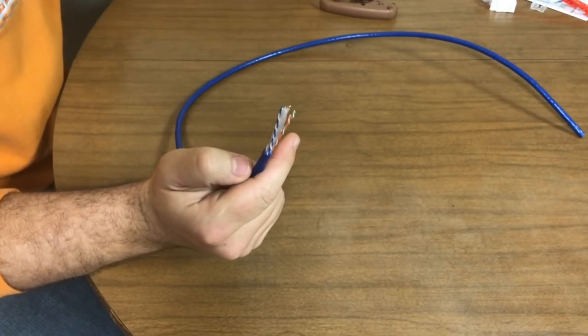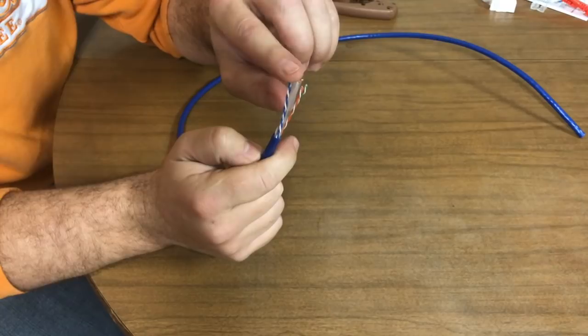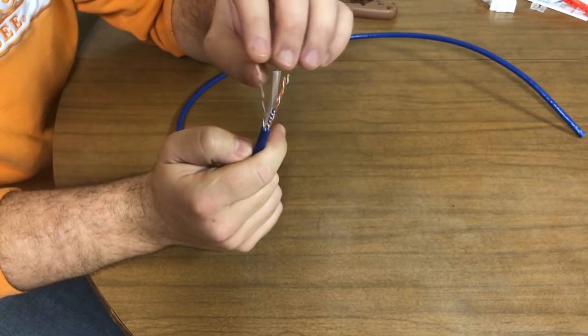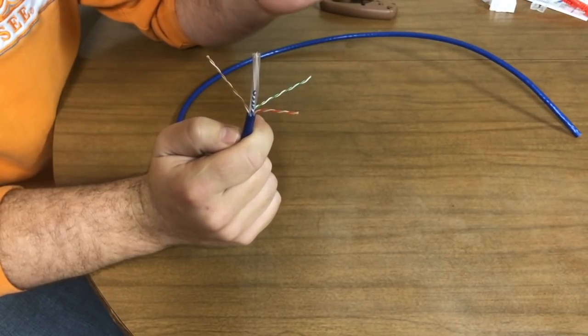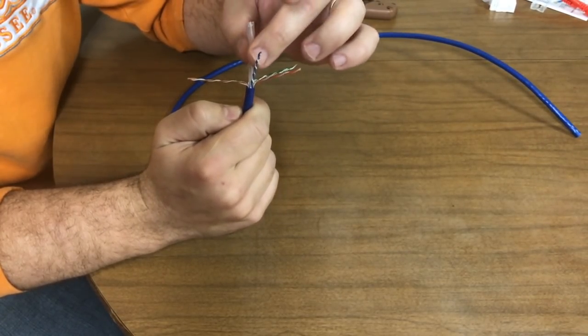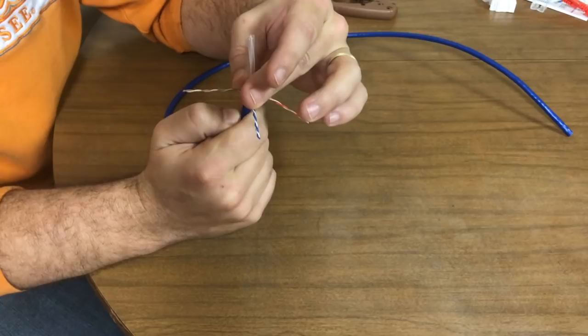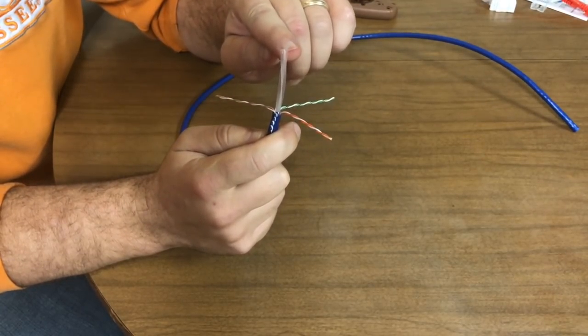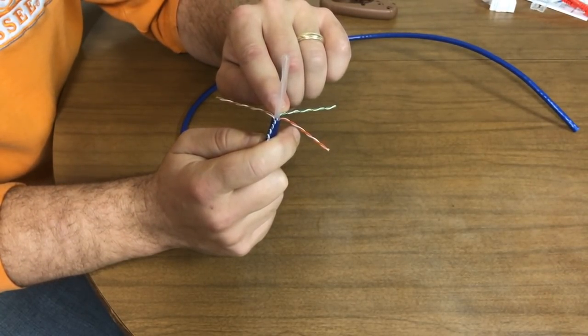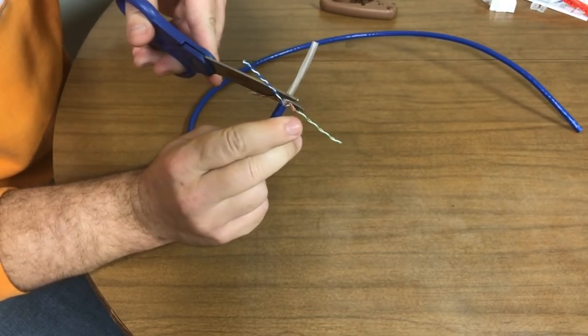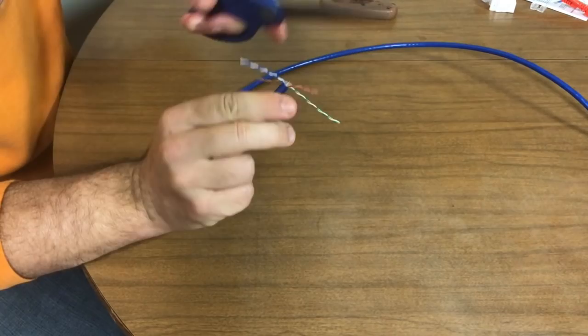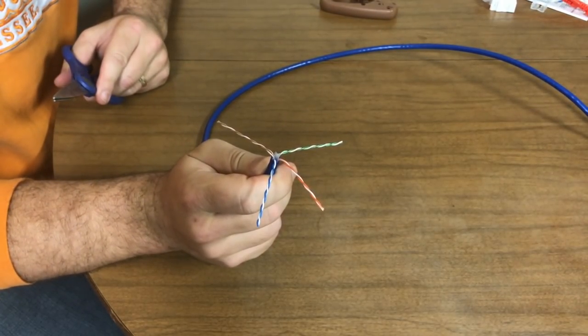The next thing that you're going to find is the four twisted pairs. So there's your blues, your browns, your oranges, and your greens. So pull those back. This Cat 6 cable has a separator to separate the twisted pairs. Again, you just want to take a pair of scissors or something and just simply cut that back as close to the bottom as you can.